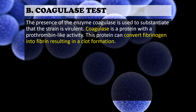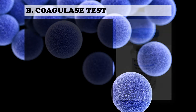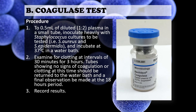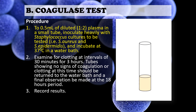The coagulase test is used to differentiate Staphylococcus aureus, which is coagulase positive, from other staphylococcal species. We'll be needing rabbit plasma — here is an example of a lyophilized rabbit plasma. If you do not have rabbit plasma, you may also use human plasma. For the procedure: to 0.5 ml of diluted plasma in a small tube, inoculate heavily with the staphylococcus culture to be tested. Then incubate at 37°C in a water bath, or an incubator if a water bath is not available. Using your wire loop, transfer your organism and then incubate.